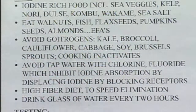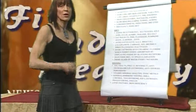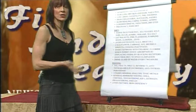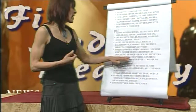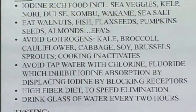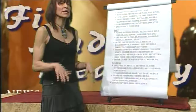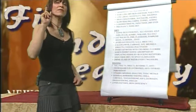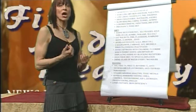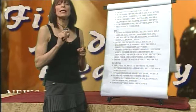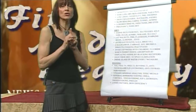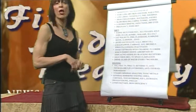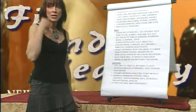Avoid tap water with chlorine and fluoride, which inhibits iodine absorption. Get some good water filtration on your drinking water — a reverse osmosis system is a wonderful under-the-sink option that can filter out most of those and particulates as well. A high-fiber diet helps speed up elimination to get rid of all these metabolites — estrogen metabolites, chemicals, all the stuff we're taking in. They estimate we get as much toxin exposure in one day as our grandparents got in 25 years. Drink lots of water every two hours — you're detoxing your body.